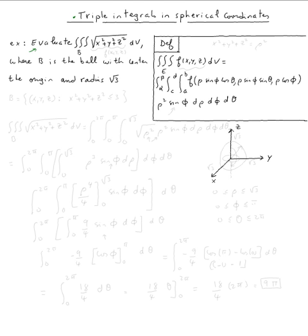Evaluate the triple integral over the ball B of the square root of x² + y² + z² dV, where B is the ball with center at the origin and radius √3. The ball is the set of all (x, y, z) such that x² + y² + z² ≤ (√3)² = 3.